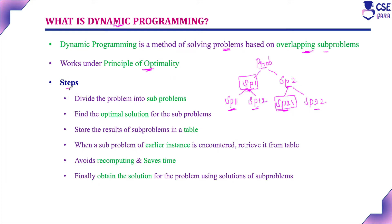The steps to implement dynamic programming: first, the given problem will be divided into subproblems however it is possible. Then find the optimal solution for the subproblems and store the results in a table. Whenever we encounter similar subproblems, use the result of the earlier instance stored in the table — just retrieve it instead of recomputing. Finally, we obtain the optimal solution for the given problem, because we concentrate on finding optimal solutions for the subproblems.